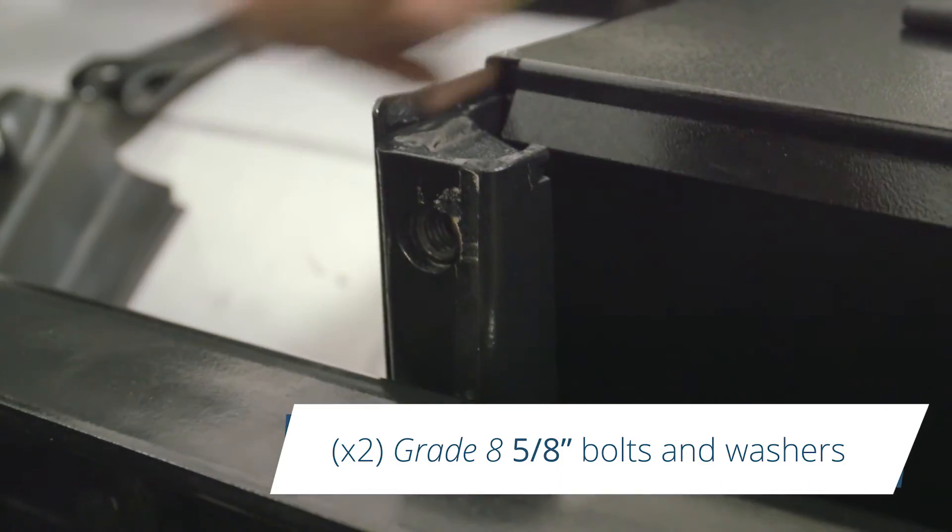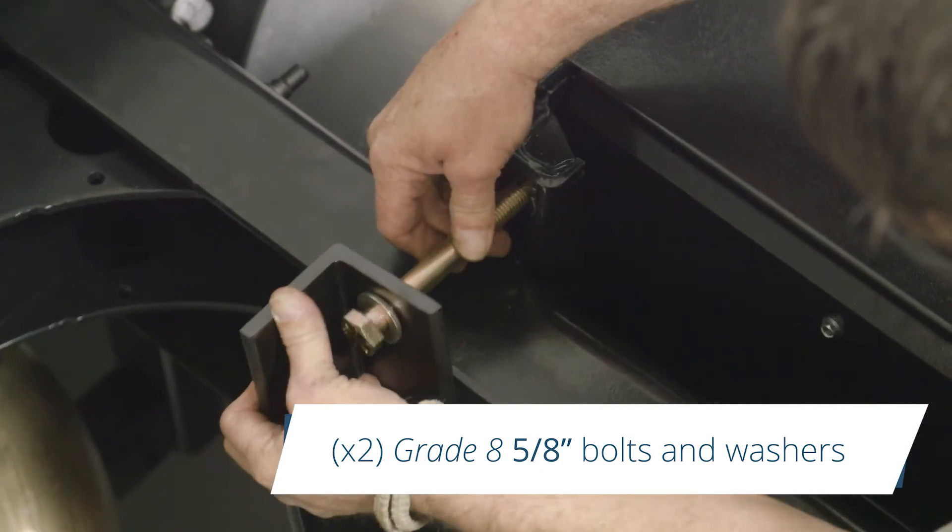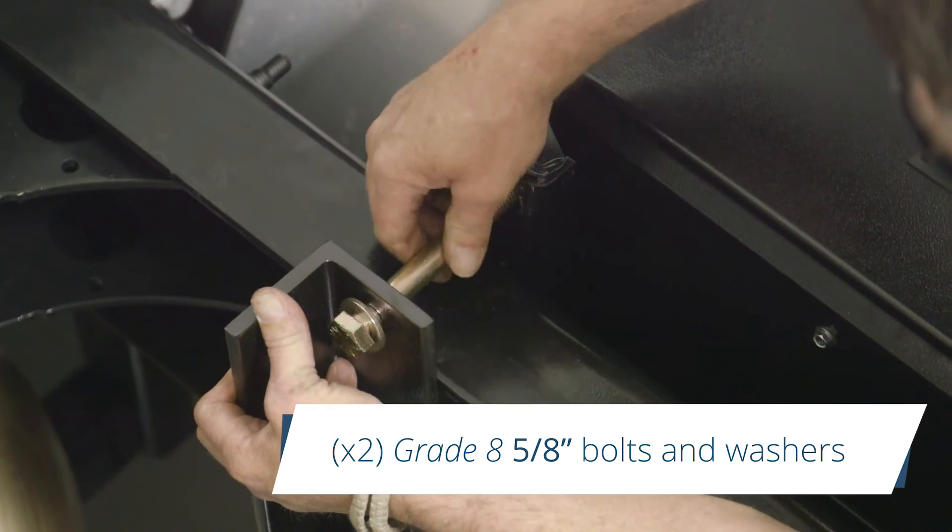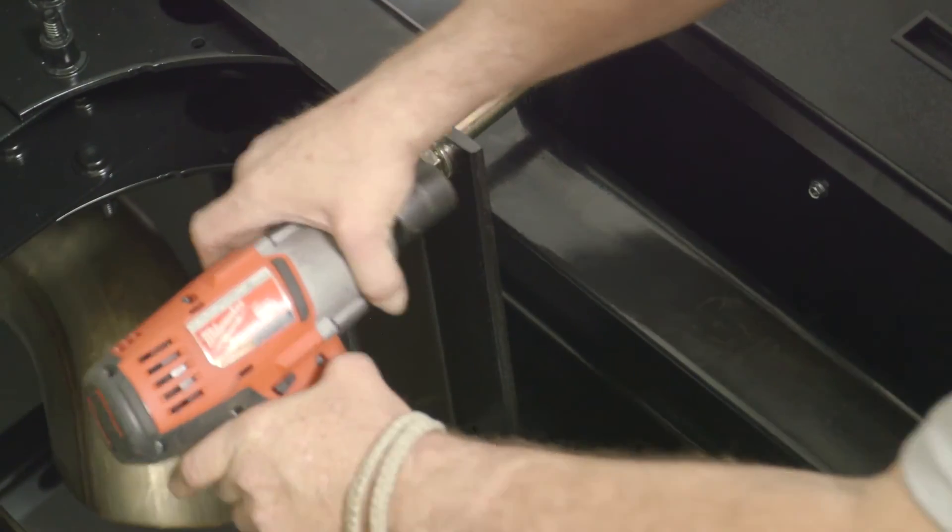Insert two grade 8, 5/8 inch bolts and washers through the holes at the top of the L brackets. Start the bolts until they are through the APU's welded frame nut.